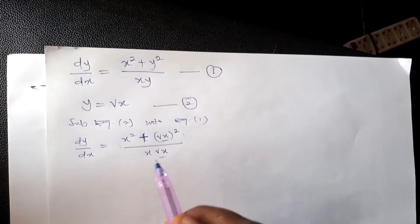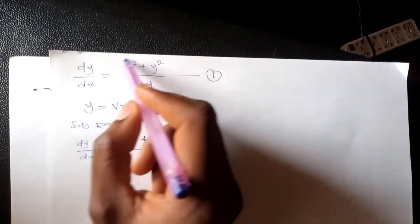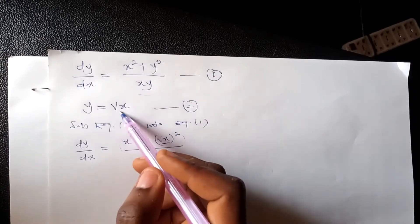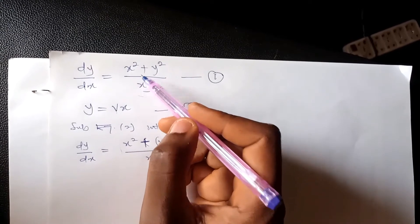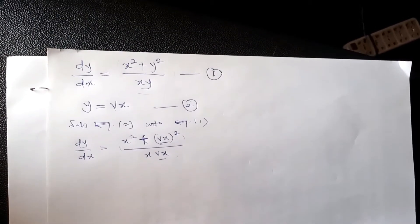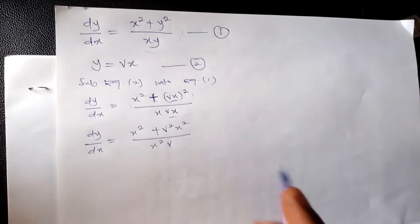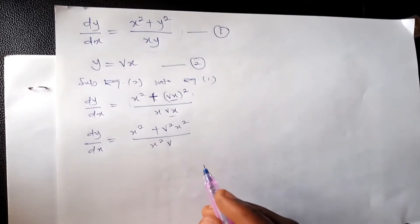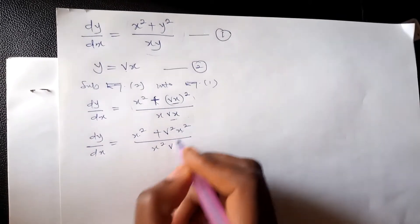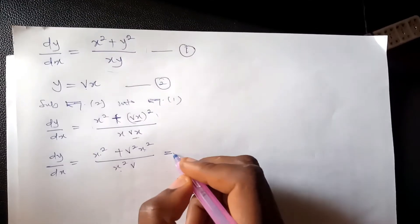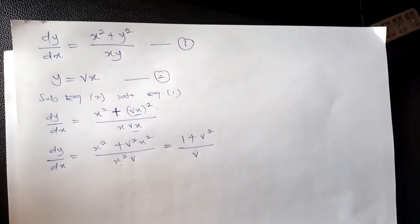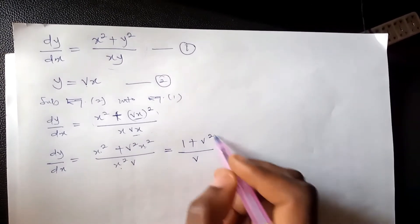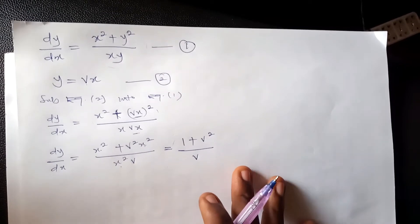Remember the two conditions: first, we cannot separate the variables in f(x, y); second, by substituting y equals vx, the independent variable disappears. After expanding and factorizing x² out, the x² cancels, and we can see the expression becomes (1 + v²) over v. There is no x remaining, so this method is valid.